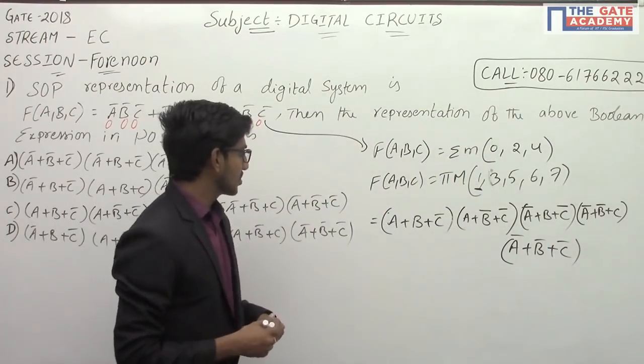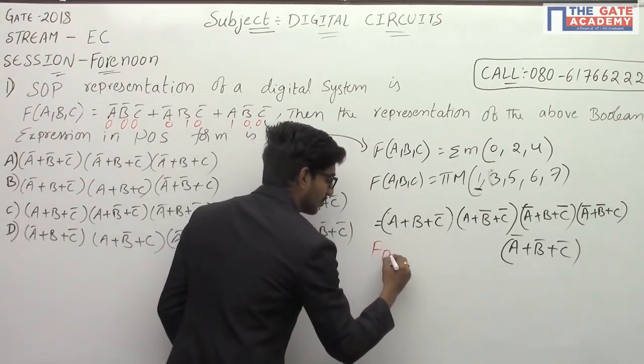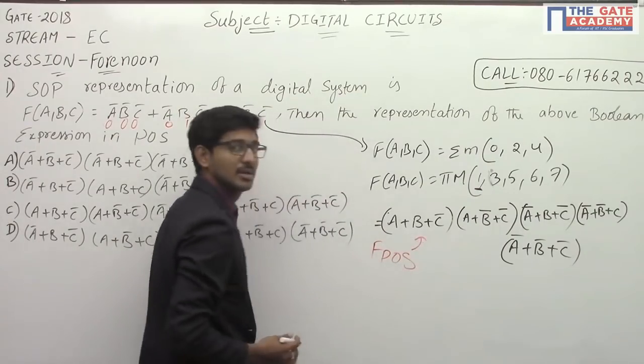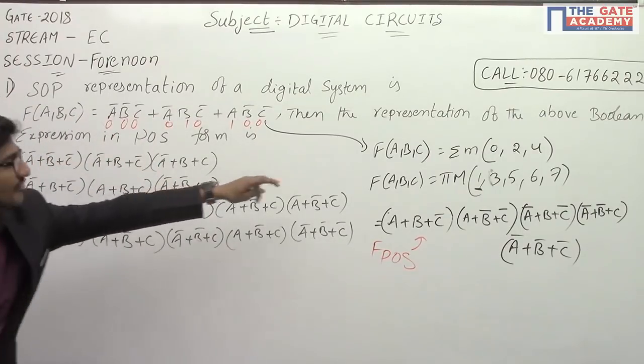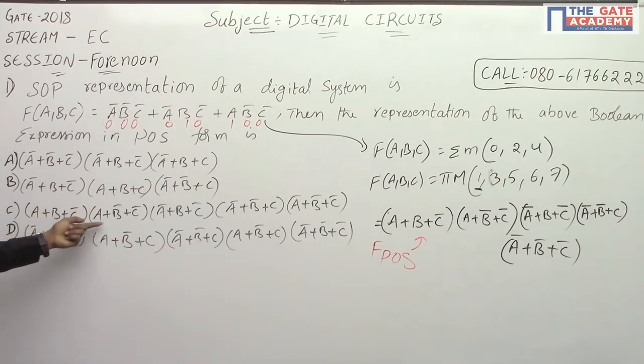If you observe the solution, this is our POS expression. Which option is correct? We have 5 maxterms. Whether C or D? If you observe the options, option C is the correct answer.